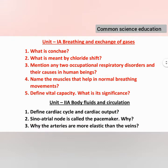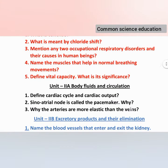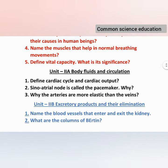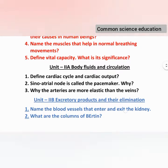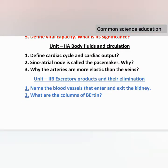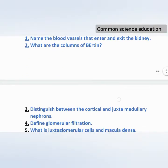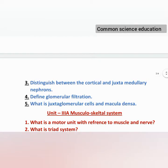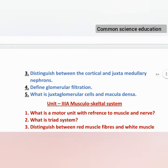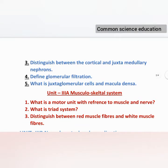Unit 2A: Body Fluids and Circulation. Unit 2B: Excretory Products and Their Elimination. Two questions each: Define cardiac cycle and cardiac output. Sino-atrial node is the pacemaker — why? Why are arteries more elastic than veins? Unit 2B: Name the blood vessels that enter and exit the kidney. What are the columns of Bertini? Distinguish between cortical and juxtamedullary nephrons. Define glomerular filtration. What are juxtaglomerular cells and macula densa?